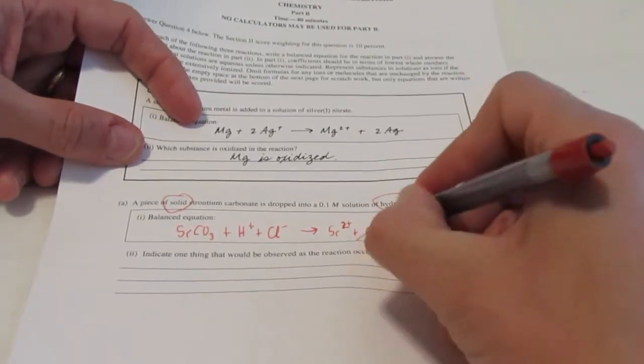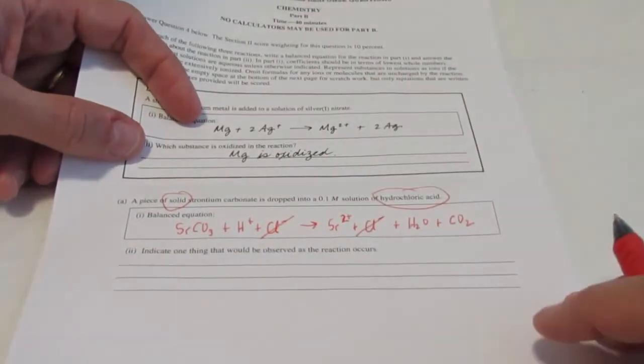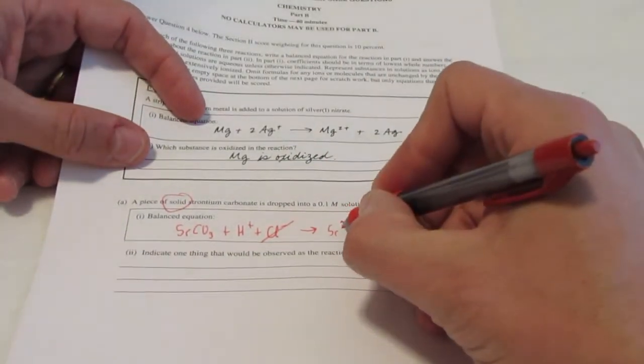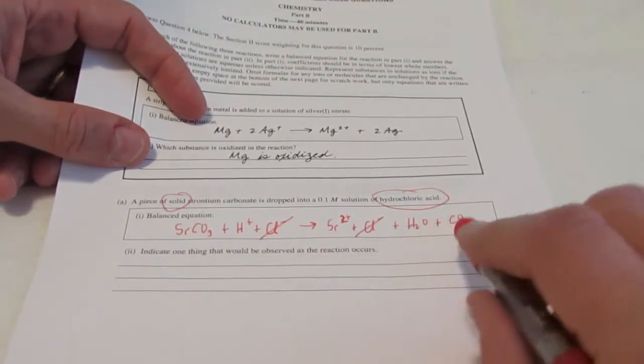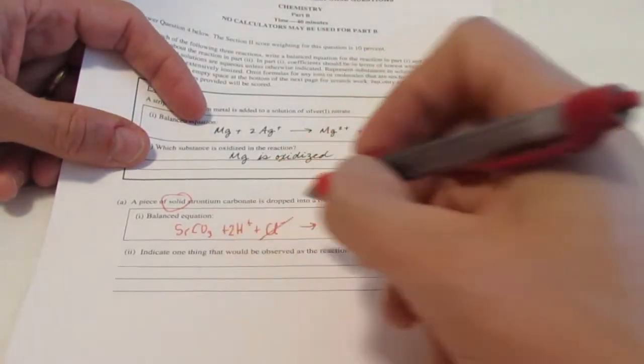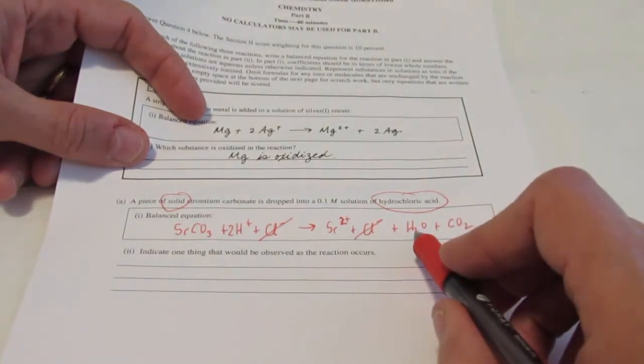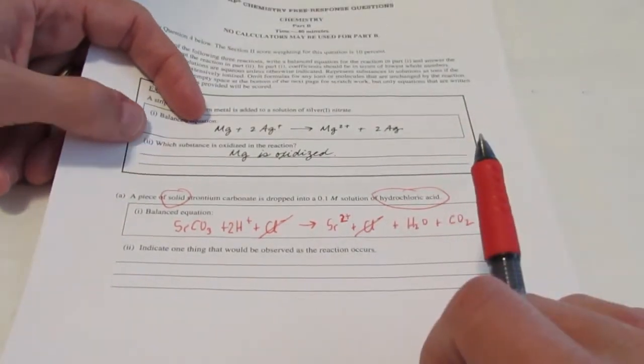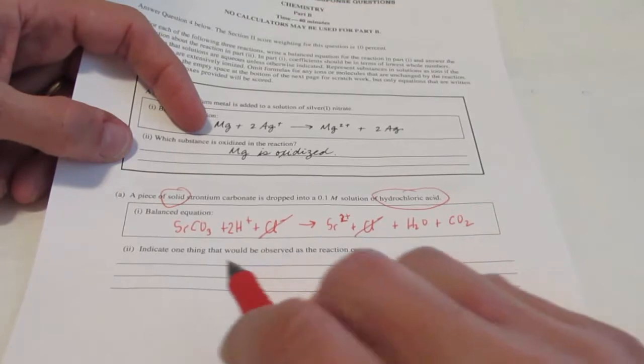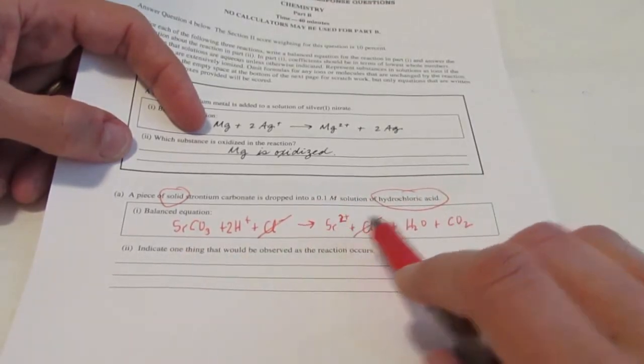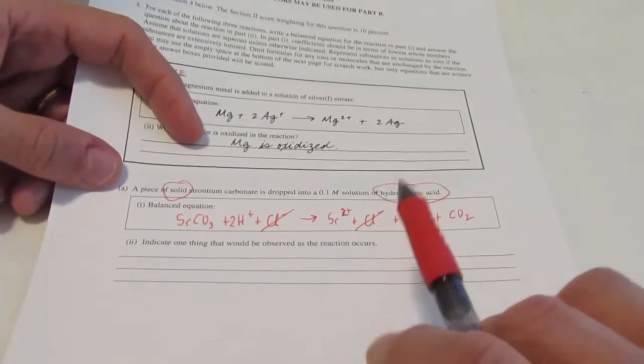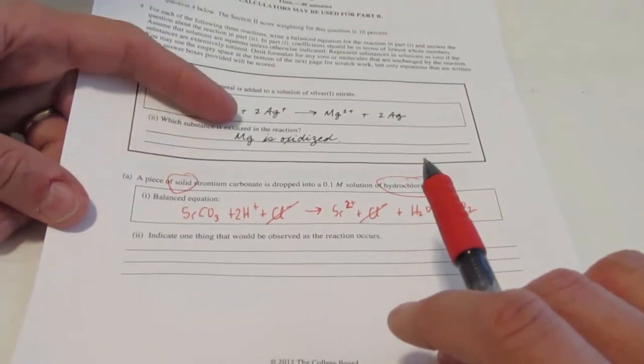Now, my spectator is the chloride ions. So we'll get rid of those. And we have our ionic equation that's not yet balanced. I have one strontium on both sides, one carbon on both sides. Let's put two in front of my H's to give me two H's on both sides and three oxygens. We are good to go. So I would have one point for my reactants, generally speaking, two points for my products, one for balancing it, and then I'm going to pick up another point by answering this question.